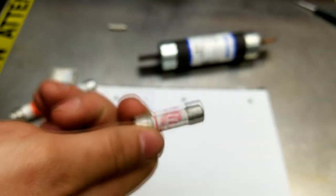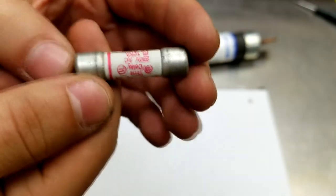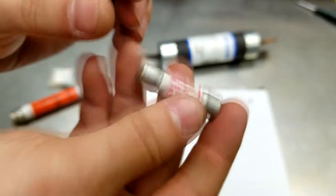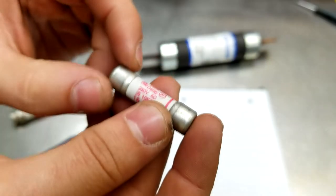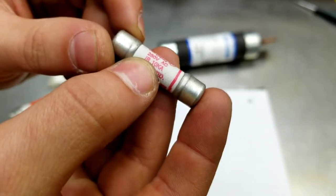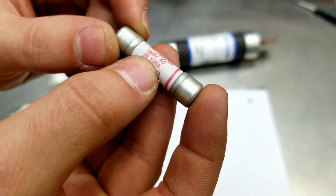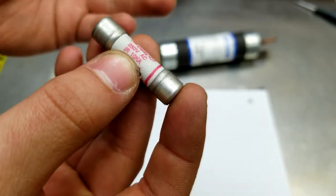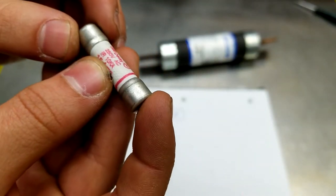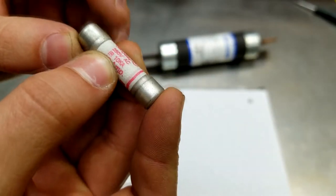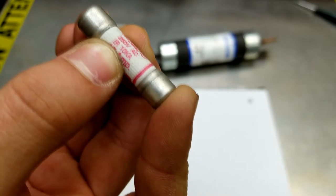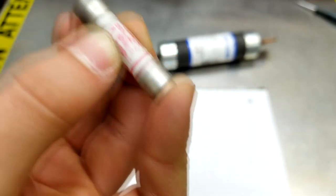So to solve that problem, we use a HRC fuse. And that's right. So this puppy has a different type of rating on it, and that is this: IR 10KA. Now what is KA? Kiloamps. That's right. This little fuse can stop 10,000 amps current flow.